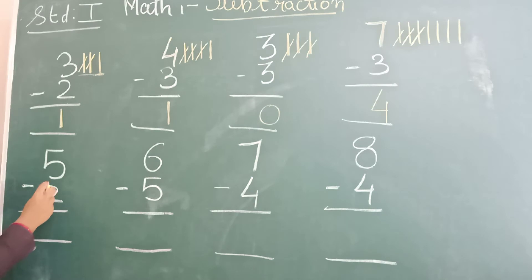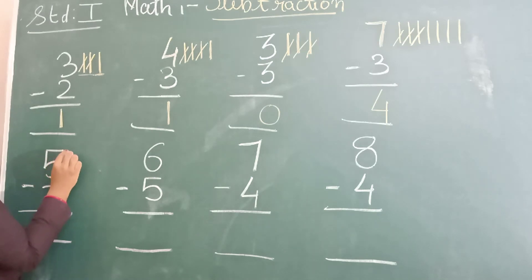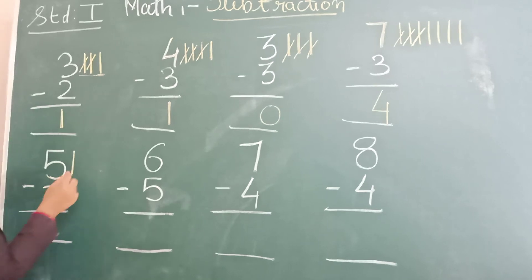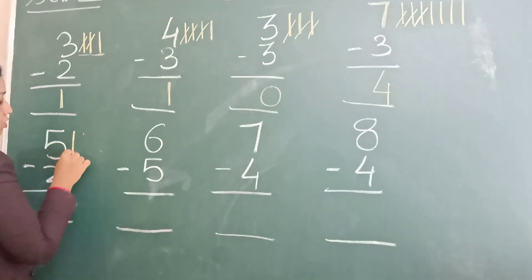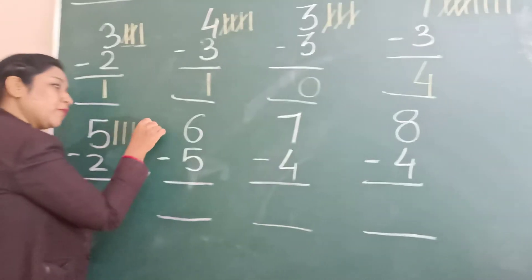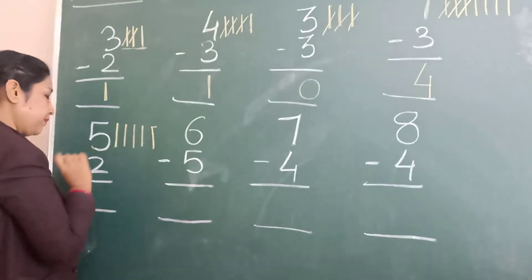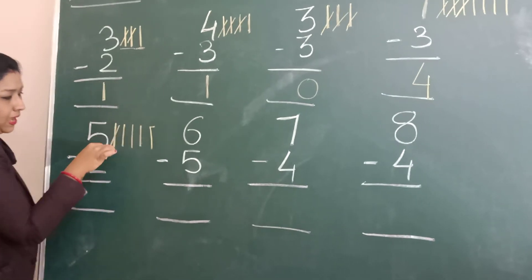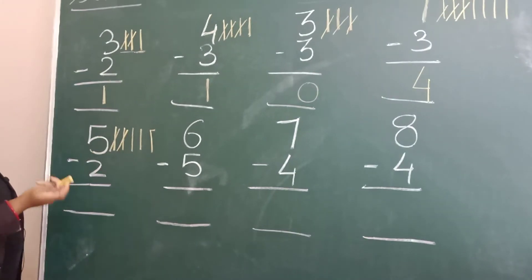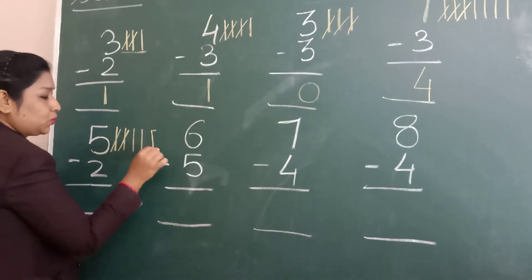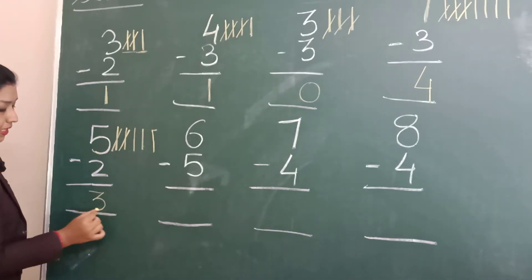Got it? Now here we have the number 5. How many lines you will draw? You will draw 5 lines: 1, 2, 3, 4, 5. And how many lines you will cut? You will cut 2 lines: 1, 2. How many lines remain? 1, 2, 3 lines. Very good.